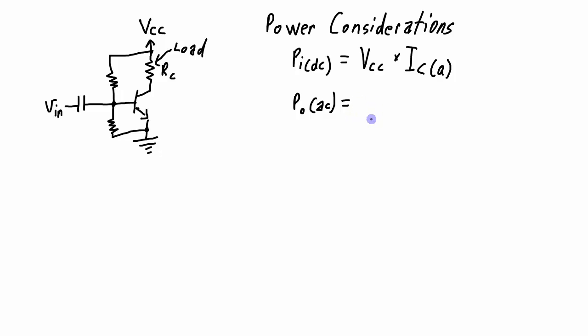And it's going to be equal to the RMS collector current times RC. But it could also be equal to the voltage across RC.